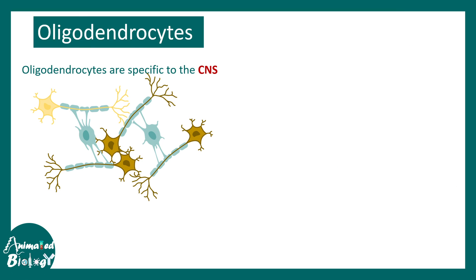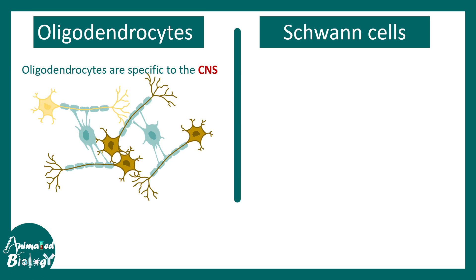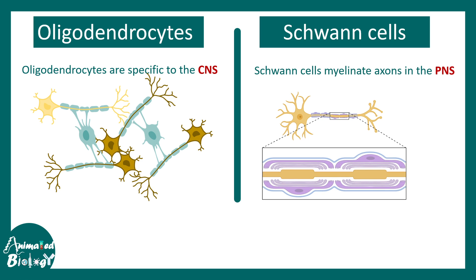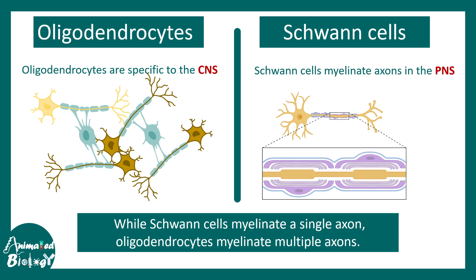Oligodendrocytes are characteristic of the central nervous system. In the peripheral nervous system, we find an equivalent cell type known as Schwann cells. Schwann cells also form the myelin sheath, but in the peripheral nervous system. Importantly, while Schwann cells myelinate only a single axon, one oligodendrocyte can myelinate multiple axons. These are the key differences between these two cell types, along with their location.